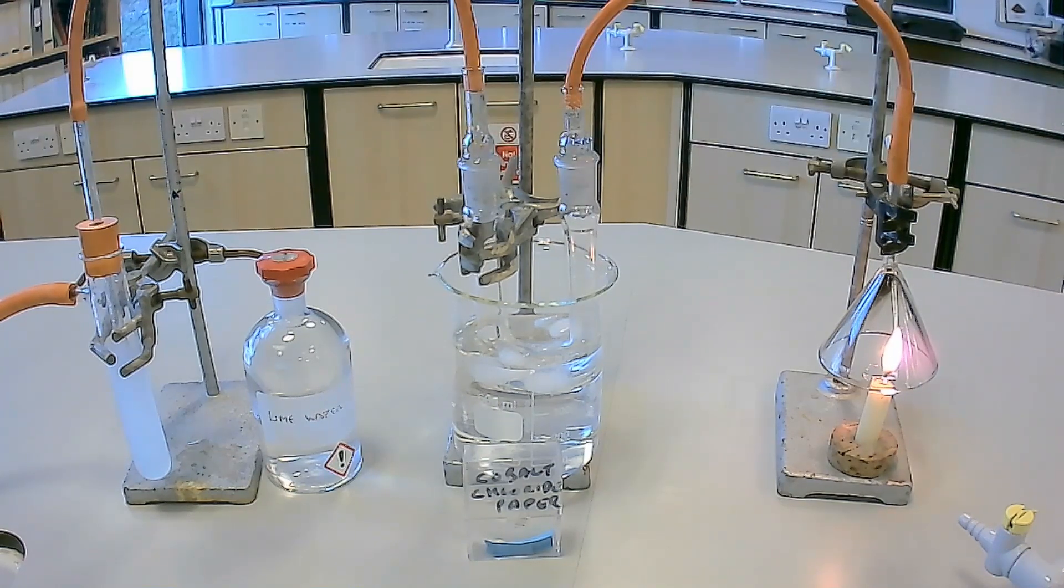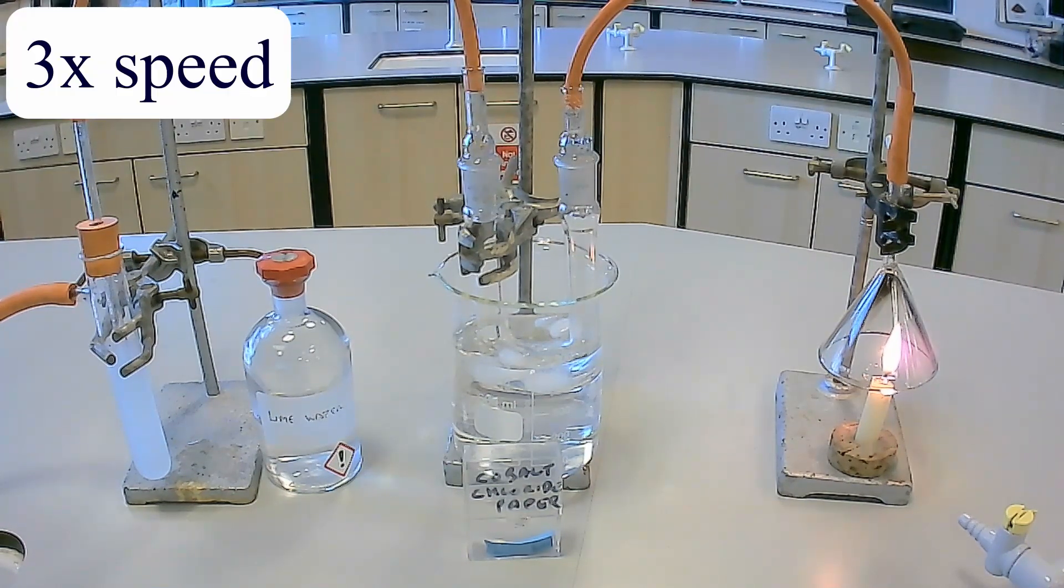In the U-shaped tube, the cobalt chloride paper is testing for the presence of water. As the gases are drawn through the U-shaped tube, when they get to the portion of the tube in the iced water, the gases cool down.